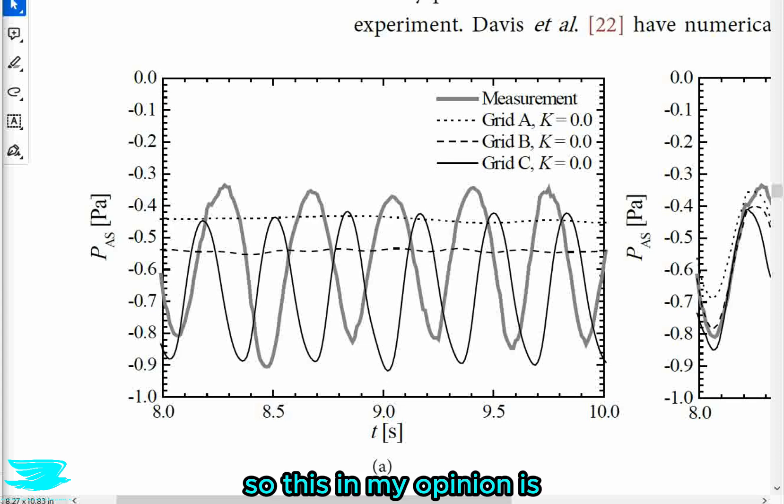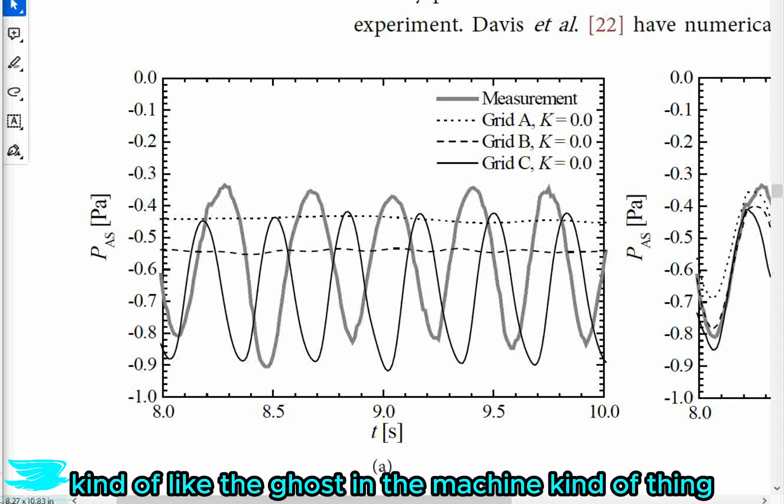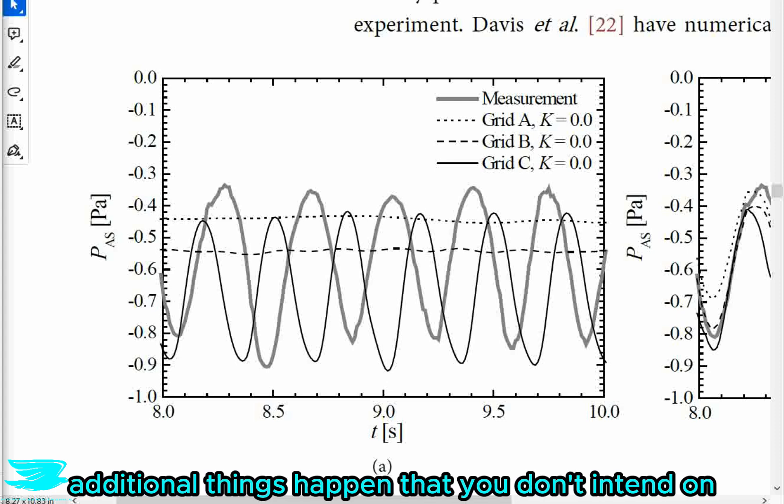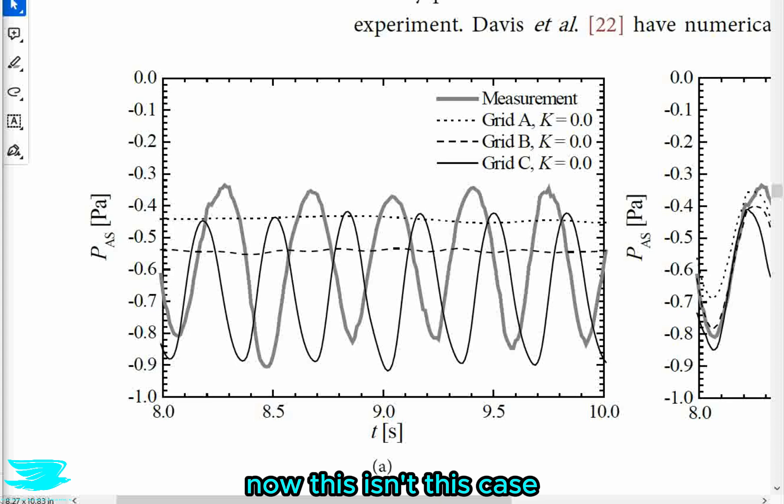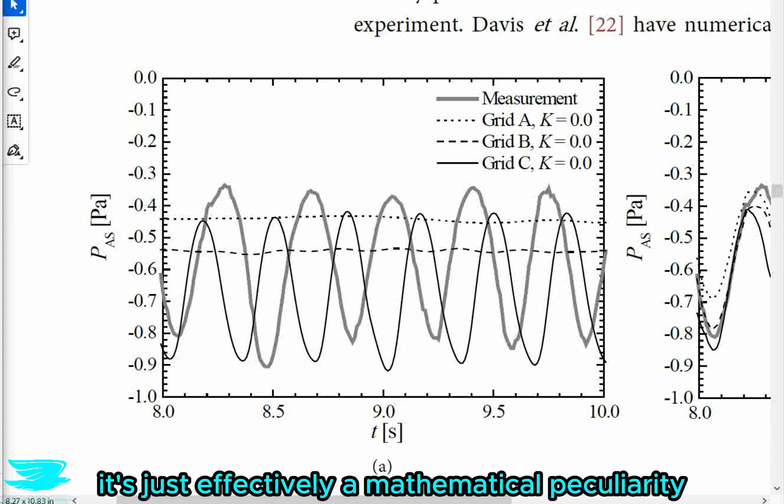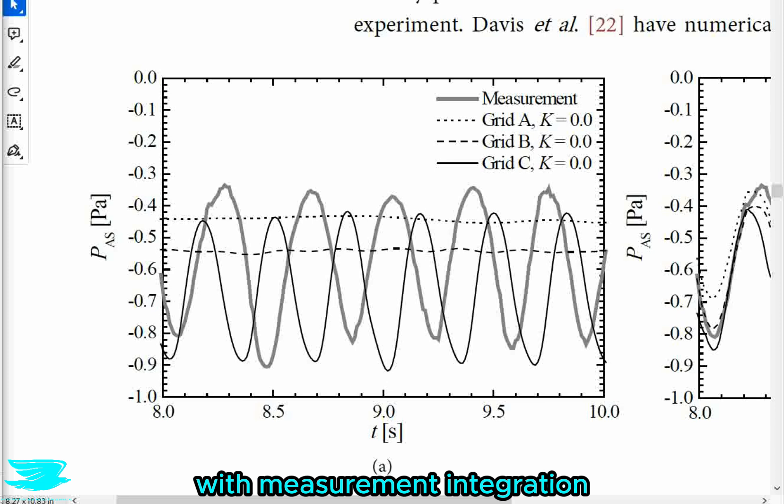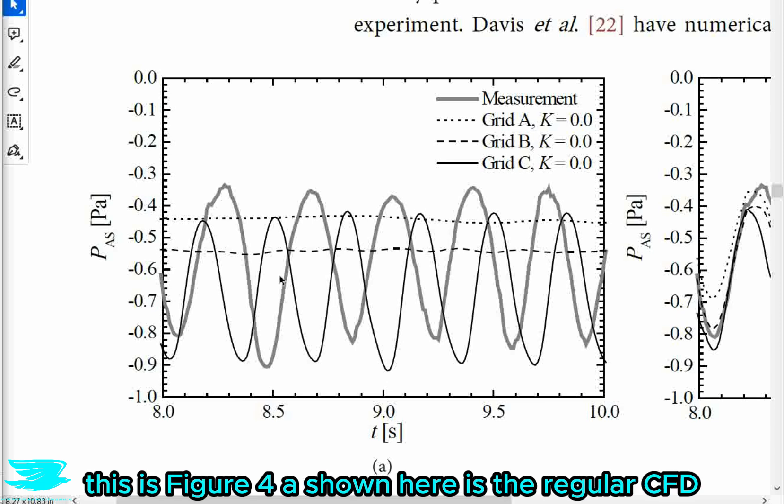So this, in my opinion, is like, kind of like the ghost in the machine kind of thing, where you get your program, you program the computer to do something, but somehow additional things happen that you don't intend on. Now, this is, in this case, is just effectively a mathematical peculiarity, but still. So bringing this all back to CFD with measurement integration, this is figure 4a. Shown here is the regular CFD.